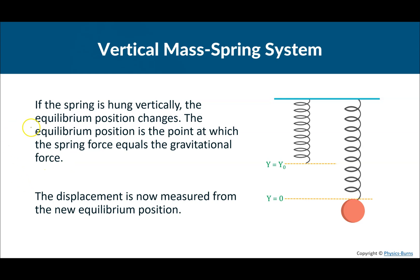Vertical mass-spring system: if the spring is hung vertically, the equilibrium position changes. The equilibrium position is the point at which the spring force equals the gravitational force. The displacement is now measured from the new equilibrium position. For example, with nothing attached to the spring, the original equilibrium position is at the top. However, when we attach a ball, it's going to sag down because of the mass. If it's just stopped and not moving, this is now the equilibrium position — because the net force is equal to zero. There is a force of gravity from the ball, and a force of the spring, but they equal each other out. That's why this has now become the equilibrium position.